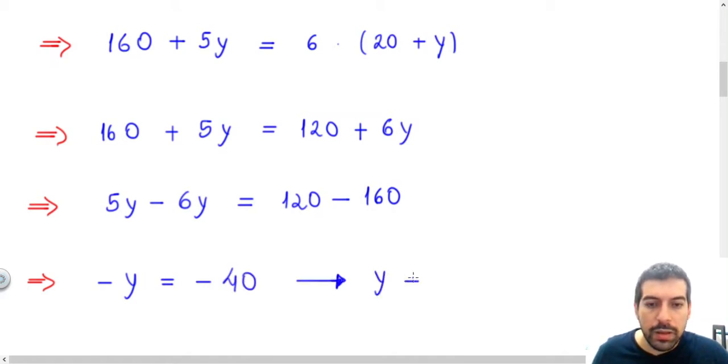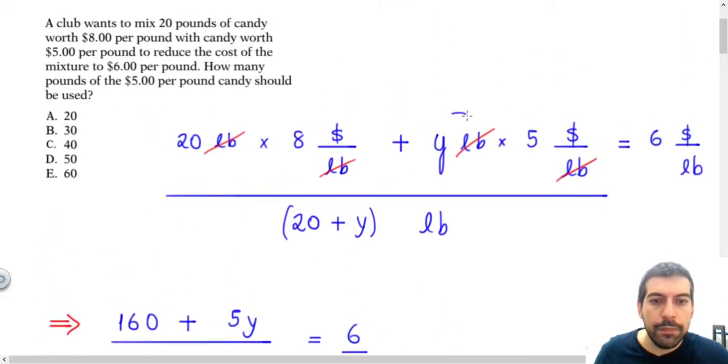So our answer is that the quantity Y needs to be 40. We know that we need to combine 40 pounds of that quantity in order to reduce the cost to $6 per pound, as the question asked us. Very good, bye-bye.